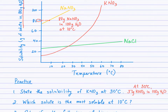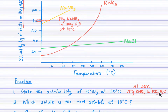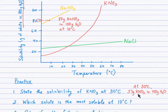Using the graph, I went to 30 degrees Celsius and followed up to the red curve, which is KNO₃, then read across and estimated we're above 30, halfway between 30 and 40 — so about 37 or 38 grams of KNO₃ will dissolve in 100 grams of water at 30 degrees Celsius. That is the solubility of KNO₃ at that temperature in that amount of solvent — no more, no less. This is the maximum amount that can dissolve.